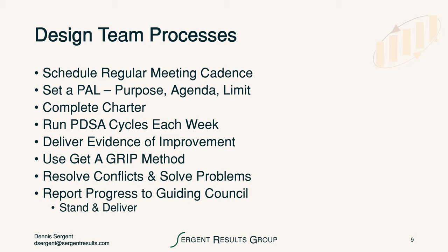Design team processes include setting a regular meeting cadence — weekly is a minimum. Design teams do not have to meet for a whole day, but they should meet for at least one hour a week to sync up, leaving the rest of the hours to do the actual work. It's important for teams to set a purpose, agenda, and limit for every meeting; to complete their charter; to run PDSA cycles each week; and to deliver evidence of improvement through those PDSA cycles. They use the get-a-grip method to reach consensus on the aim, goals, roles and responsibilities, interpersonal relationships, and processes — and it's an opportunity to learn how to resolve conflicts and solve problems.